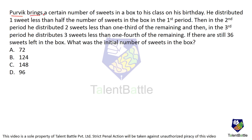Question 2: Purvik brings a certain number of sweets in a box to his class on his birthday. He distributed one sweet less than half the number of sweets in the first period. In the second period he distributed two sweets less than one third of the remaining. In the third period he distributes three sweets less than one fourth of the remaining. If there are still 36 sweets left, what was the initial number of sweets?